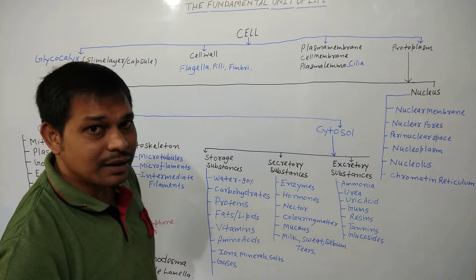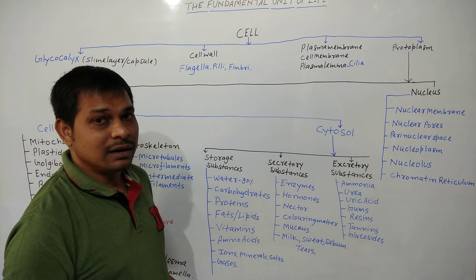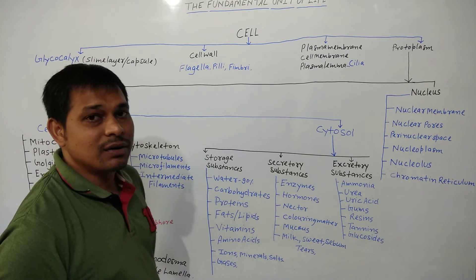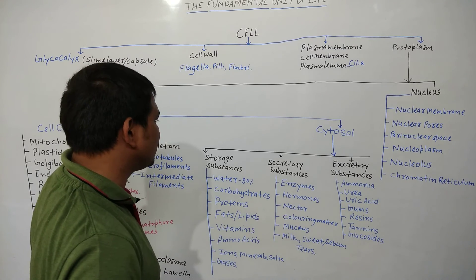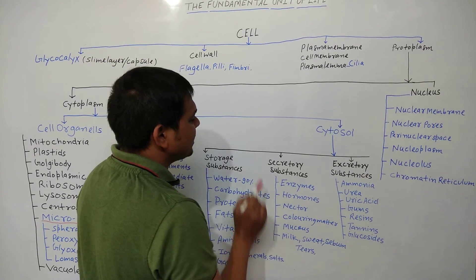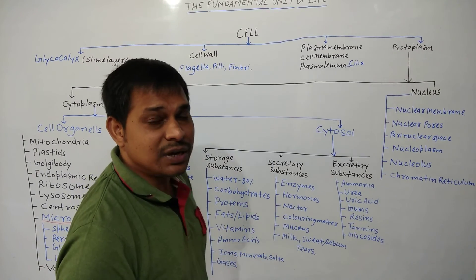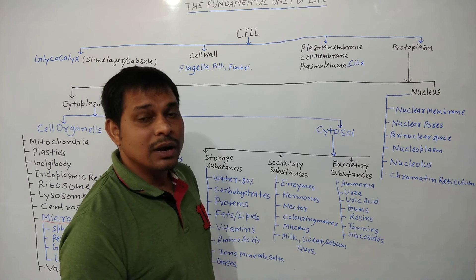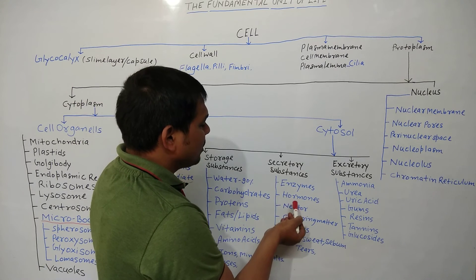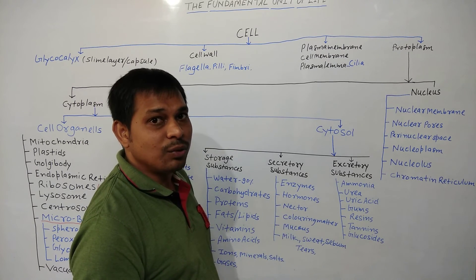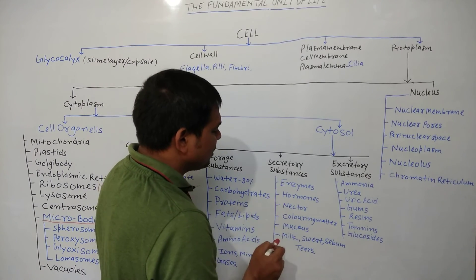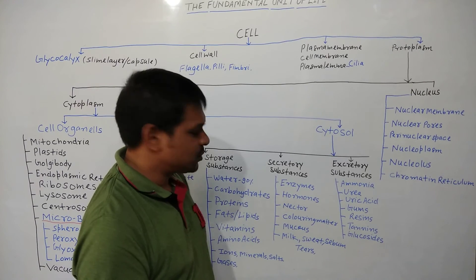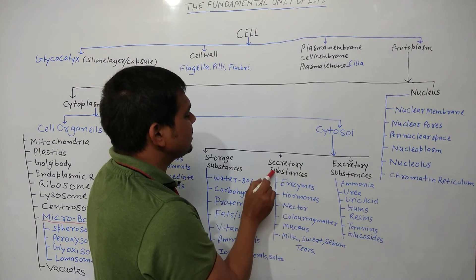Storage substances also include salts like NaCl, and gases like oxygen, carbon dioxide, and nitrogen. Secretory substances include enzymes like pepsin, renin, trypsin, and chymotrypsin; hormones like insulin, glucagon, growth hormone, thymosine, epinephrine, and adrenaline; as well as nectar, coloring matters, mucus, milk, sweat, sebum, and tears.